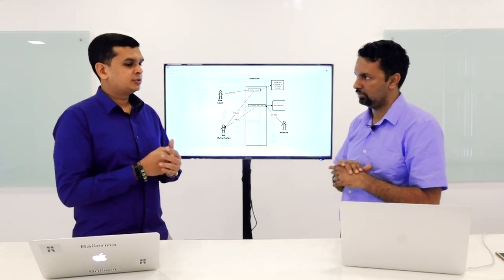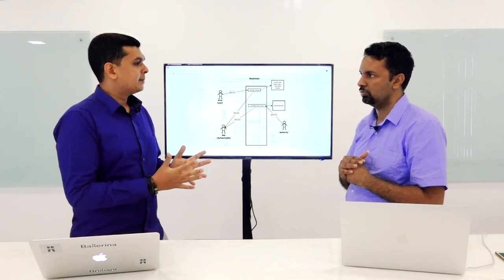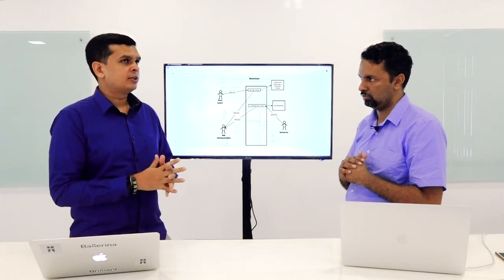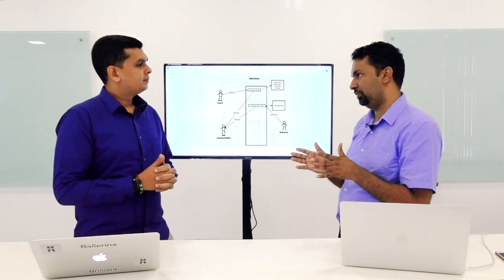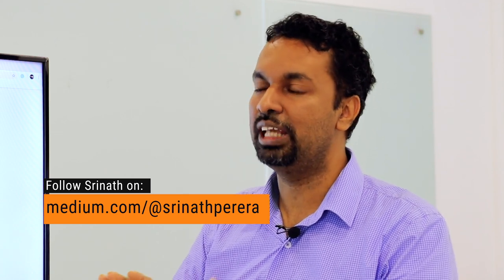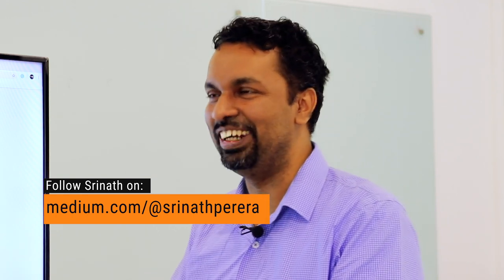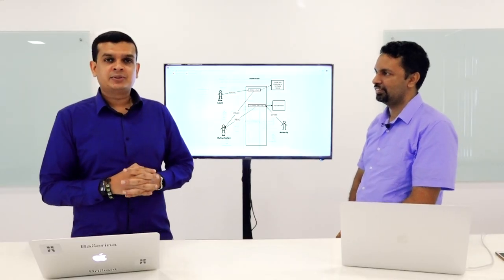Bitcoin solved the double-spending issue. So what is the benefit of using IAM with blockchain technology — can't you use a database implementation? You could, but the difference is decentralization. In most other implementations of the same problem, there is one central party who controls the data and can change it. But if you implement IAM on top of blockchain and it's decentralized, nobody can change it — unless you have more than half of the network agree to the change, and at that point it's no longer a secret. That's highly unlikely.